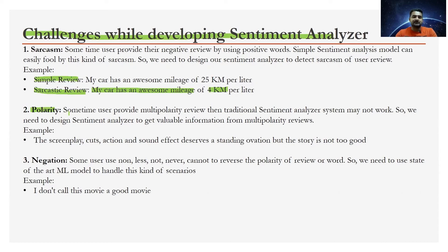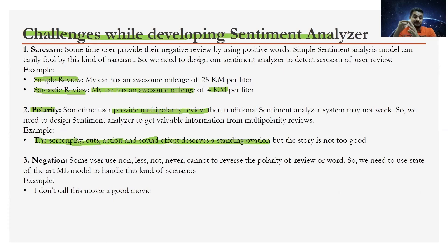The second challenge is multi-polarity. Reviews often contain multiple sentences where the user likes some attributes of a product but not others. For example, a movie review may be positive about screenplay, action, and sound effects, but then state 'the story is not too good' — so the sentiment changes mid-review. We need industry-level solutions to handle multi-polarity and extract insights from multiple sentences at runtime or in production.